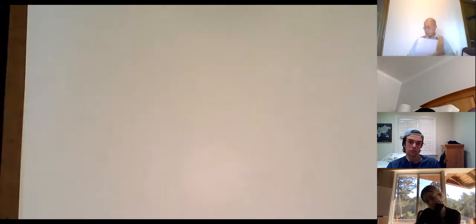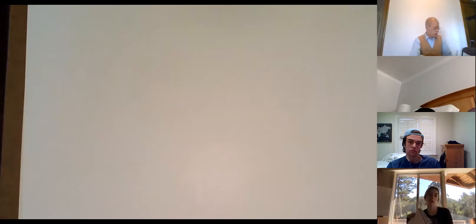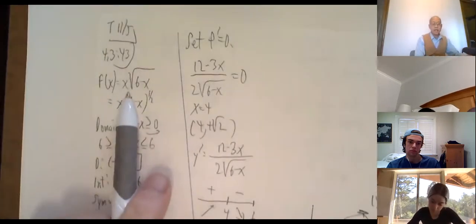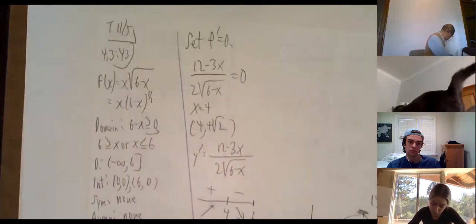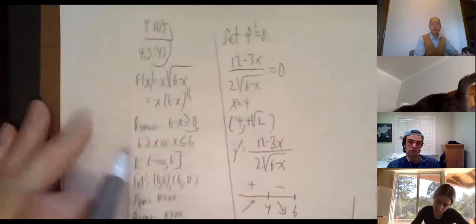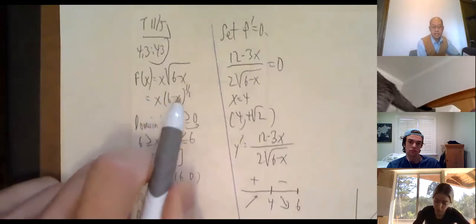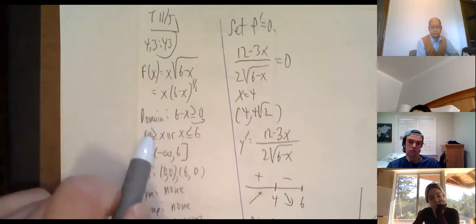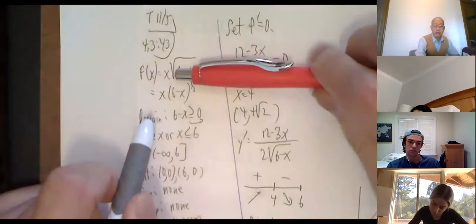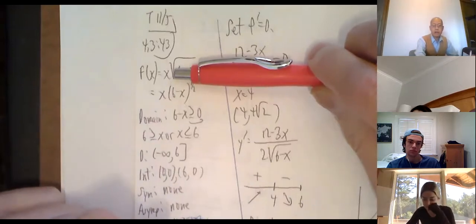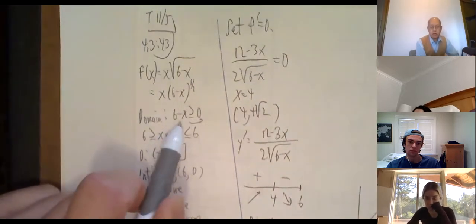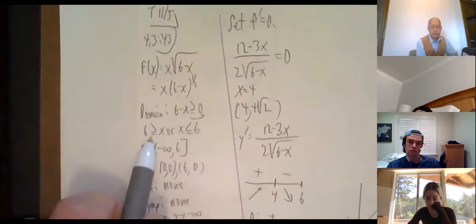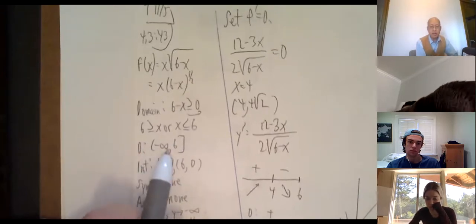The next example is harder due to a domain issue — that's number 43: f(x) = x√(6 - x), written as x(6 - x)^(1/2). I need a chain rule and a product rule. The domain: I need 6 - x ≥ 0, so x ≤ 6. Domain is (-∞, 6].